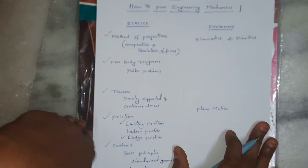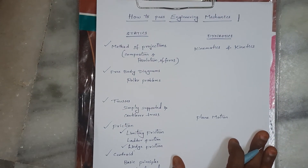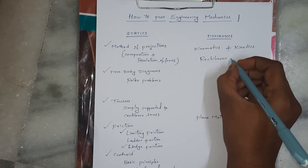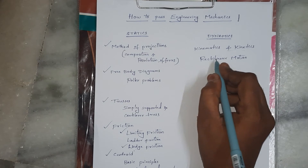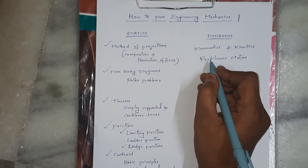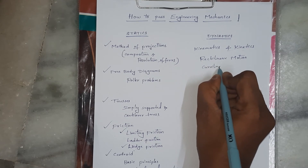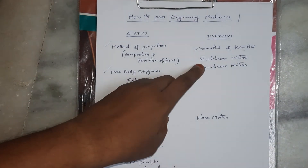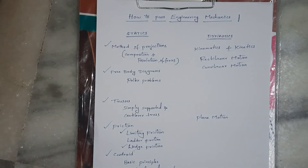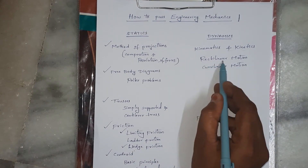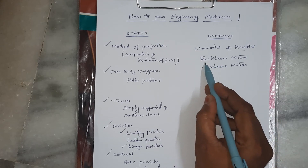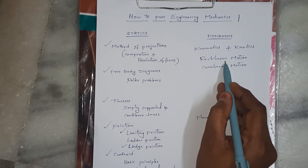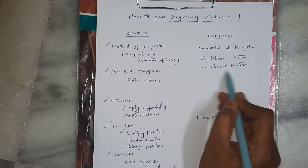Next is Dynamics. Under Kinematics, the main topic is Rectilinear Motion. The three key equations are: V = U + AT, S = UT + ½AT², and V² - U² = 2AS. Using these three equations you can solve most problems. Rectilinear Motion is the main focus; Curvilinear Motion is also included in Engineering Mechanics.